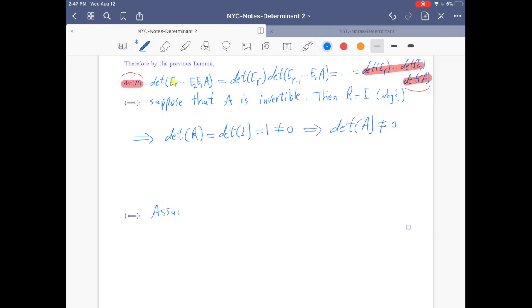Let's prove the other side. Now assume det(A) is not zero. We will show A is invertible. If det(A) is not zero, then det(R) is not zero by the similar discussion we had with that equality.